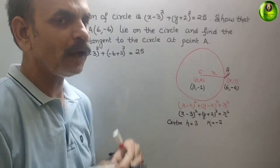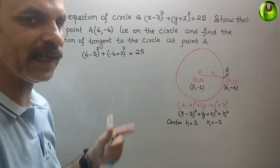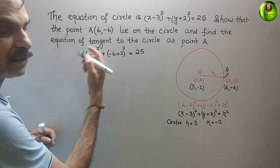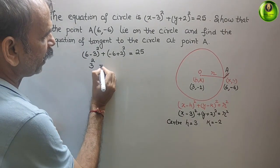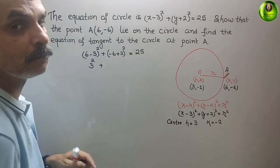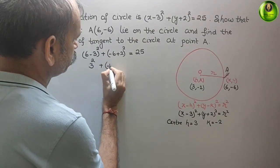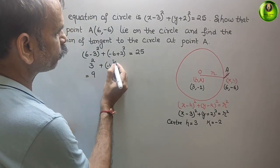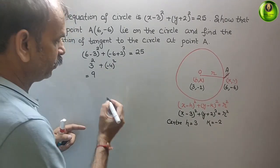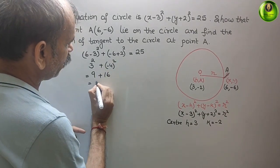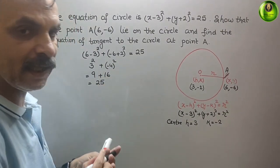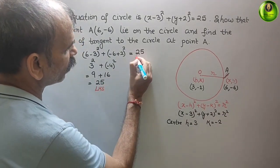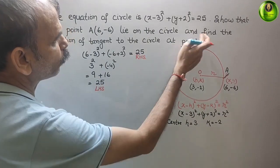We check LHS = RHS. LHS: 6-3 = 3, so 3² = 9; and -6+2 = -4, so (-4)² = 16. That gives 9 + 16 = 25. So LHS = RHS = 25, and we have proved that point A(6, -6) lies on the circle.